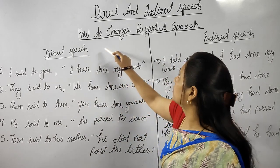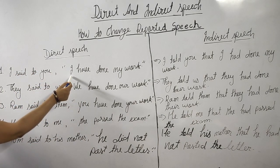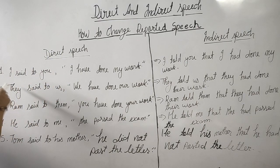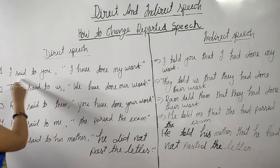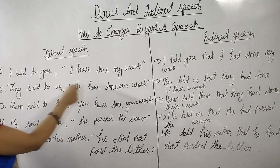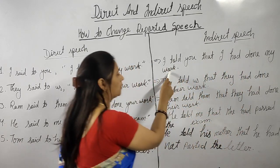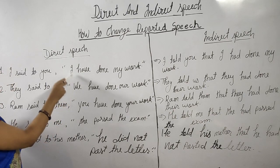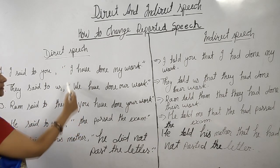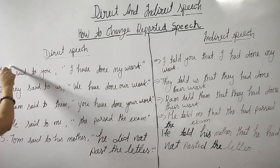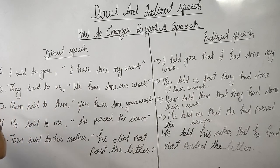Now I will tell you how to change the reported speech. As I have already told you how to change the subject of the reported speech, let's start with this example: I said to you, 'I have done my work.' Here 'said to' is past tense, so we can change it. 'Said to' will be changed into 'told': I told you that I had done my work. So 'I' is the first person — in the second table I have told you how to change the first, second, and third person. 'I' is changed according to the subject of the reporting word — in that way, 'I had done my work.'